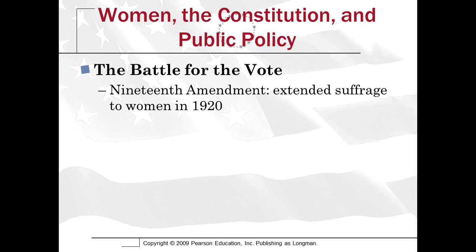The period after the passage of the 19th Amendment up until about 1960 we call the doldrums — a period where the women's movement kind of fades. A lot of women felt that once they got the vote, their issues would be resolved through elections, but as we're going to see, that wasn't really true.